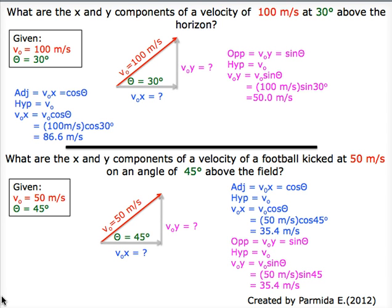The second example over here has the exact same solution. The question asks: what are the x and y components of a velocity of a football kicked at 50 meters per second on an angle of 45 degrees above the field? So that's our question over here.